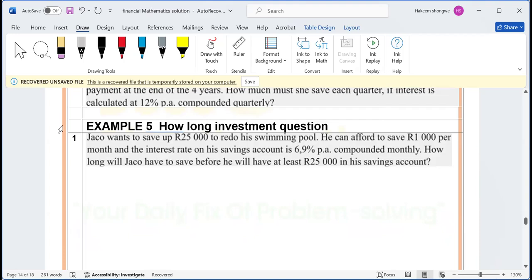So if they say Jacob wants to have 25,000, this is the future value that we want to have - 25,000. How much can we afford to pay each and every month? One thousand. Our i is the interest, which is going to be 0.069 divided by what? By 12. And then we're looking for N.